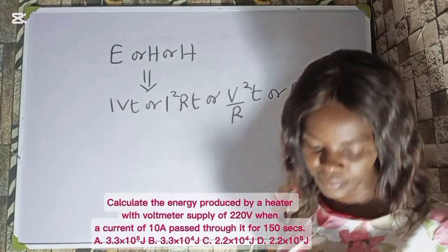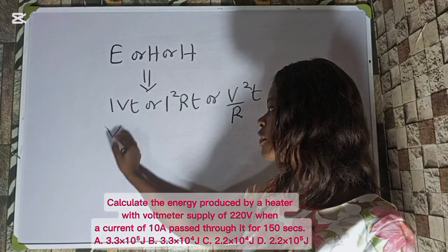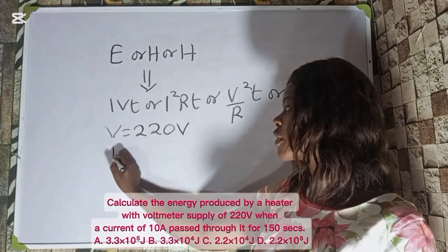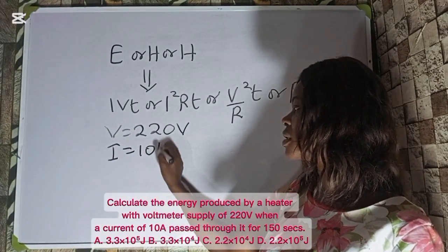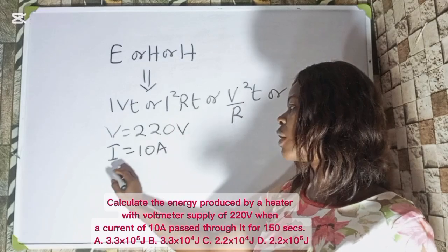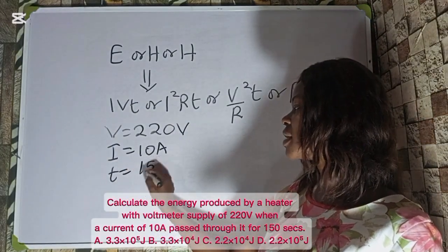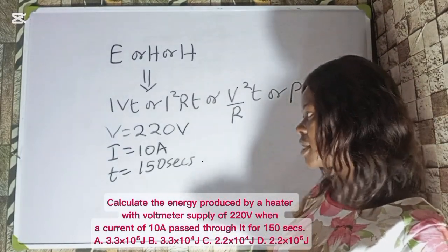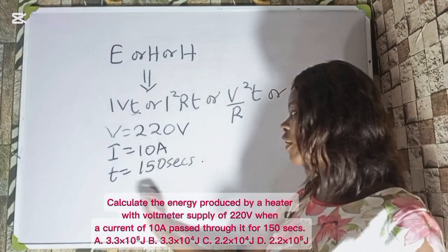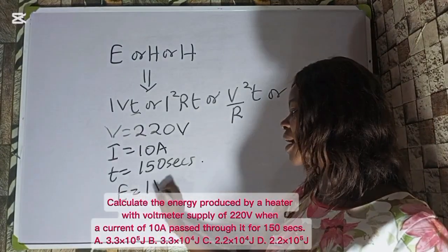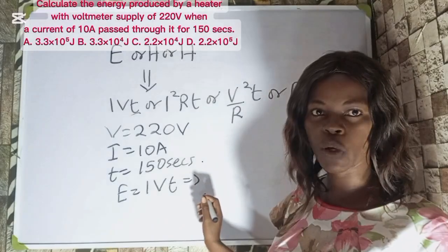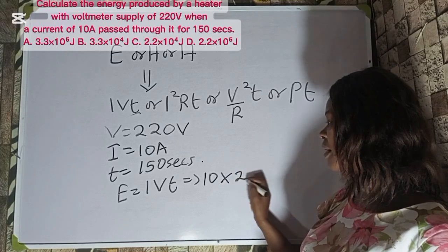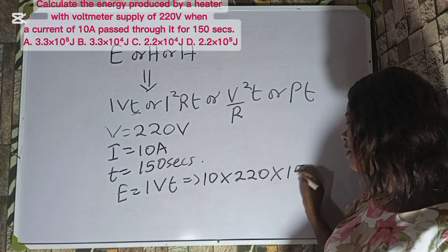We have the potential difference V = 220 volts, current I = 10 amperes, and time t = 150 seconds. The formula we will use is E = IVT, so energy = 10 × 220 × 150.